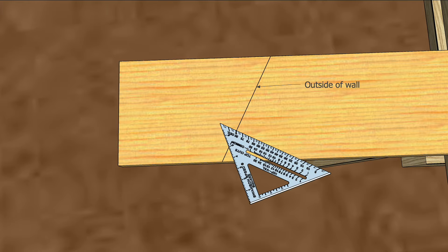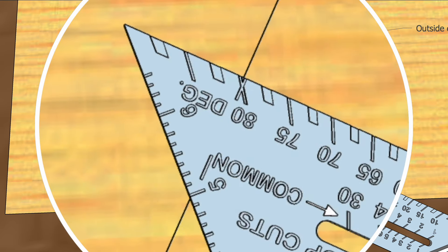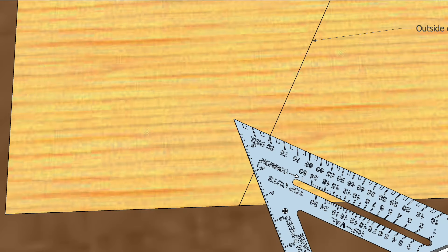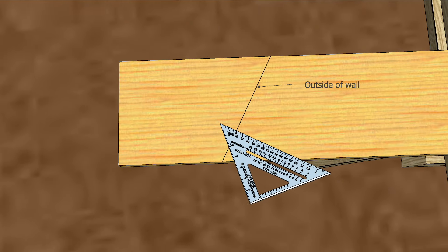The rafter should sit on the full width of the wall, so square a line off the plumb cut that is 6 inches long, which is the width of the wall in this case, and that's the seat cut. These lines on your speed square are 90 degrees from the long edge. Collectively, this triangle notch is called the bird's mouth.